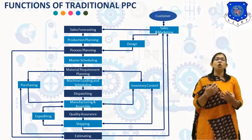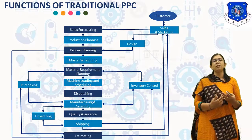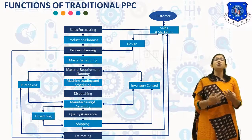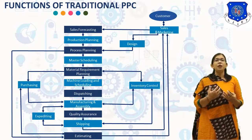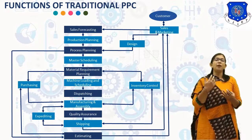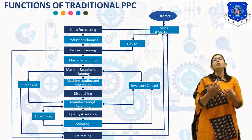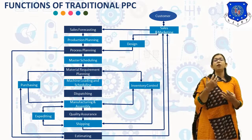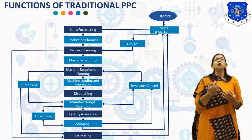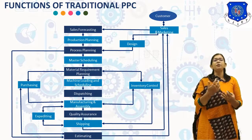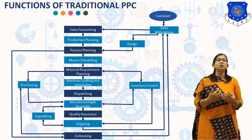The next function is Purchasing. Raw materials and components from the vendor are purchased as per the time schedule of the Material Requirement Planning. It is the function of the purchase department. Next is Machine Loading and Scheduling. Production scheduling plans the starting date and due date for each component, taking machine availability into account. Machine loading deals with the allocation of different jobs to machines and determines the sequence of jobs to be machined on each machine.